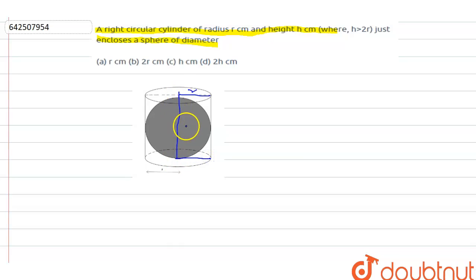h. This is h. Now in the question we have been given that h is greater than 2r. It means height is greater than 2r. So we need to tell the diameter of the sphere.